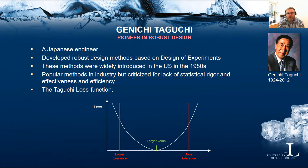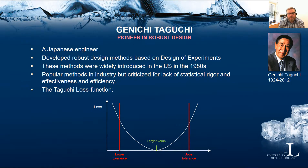Taguchi is also well known for the Taguchi loss function, a graphical representation or mental model of how an increase in variation within specification limits leads to an exponential increase in customer dissatisfaction. The common thinking was that the customer is satisfied as long as variation stays within specification limits. However, Taguchi argued that any variation away from the nominal or target value begins to incur customer dissatisfaction, and as variation increases, dissatisfaction increases exponentially.